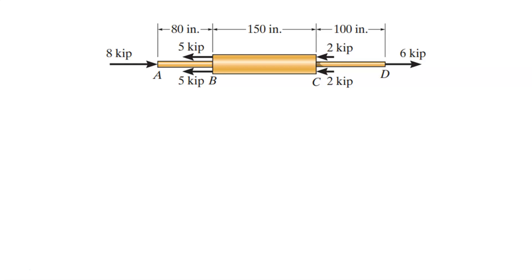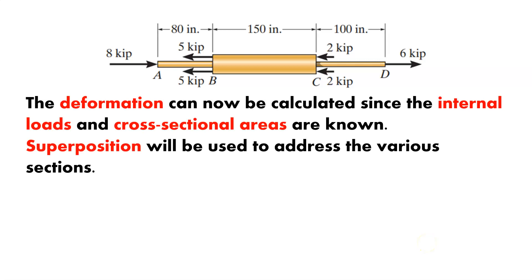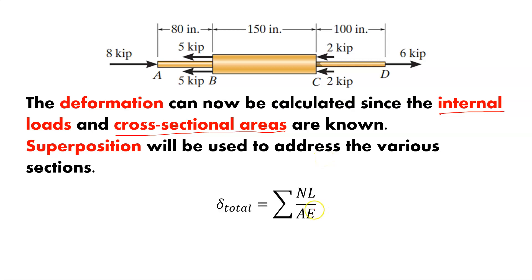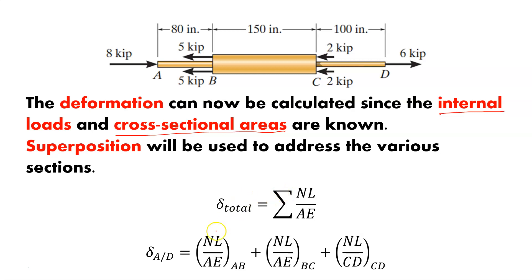We've now calculated all of our crucial information — the internal loads and the cross-sectional areas. The deformation can now be calculated using superposition: the algebraic sum of the deformations in each individual segment. Going from A to D, that's the deformation in AB plus the deformation in BC plus the deformation in CD, added together with their signs for tension and compression, giving us a net resultant for A to D.